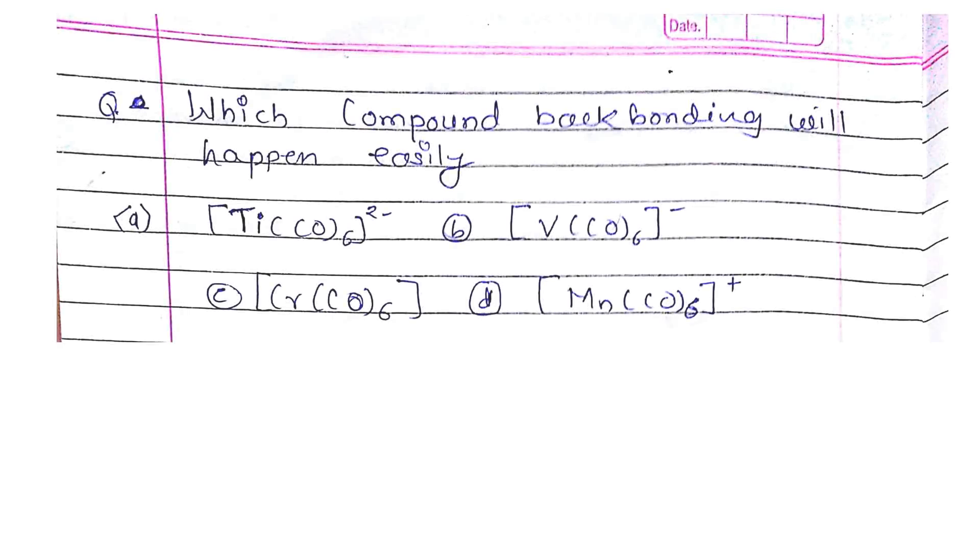Moving on to the next question. Which compound, which of the chloride compounds, will backbonding happen easily. There are four options. You know about backbonding - carbon monoxide is very famous for its backbonding. There are four complexes given with different metals: titanium complex, vanadium, chromium, and manganese.